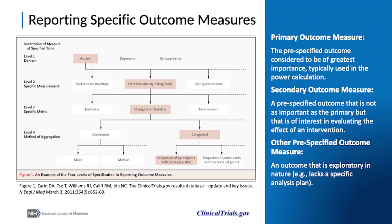Three types of outcome measures are reported in this module: primary outcome measures, which represent the analyses of greatest importance in the study and typically include the assessment used in the power calculation; secondary outcome measures, which are of lesser importance than the primary outcomes but are of interest in evaluating the effect of the interventions; and other pre-specified outcome measures, which are exploratory in nature. A well-planned outcome measure specifies four levels of analysis.